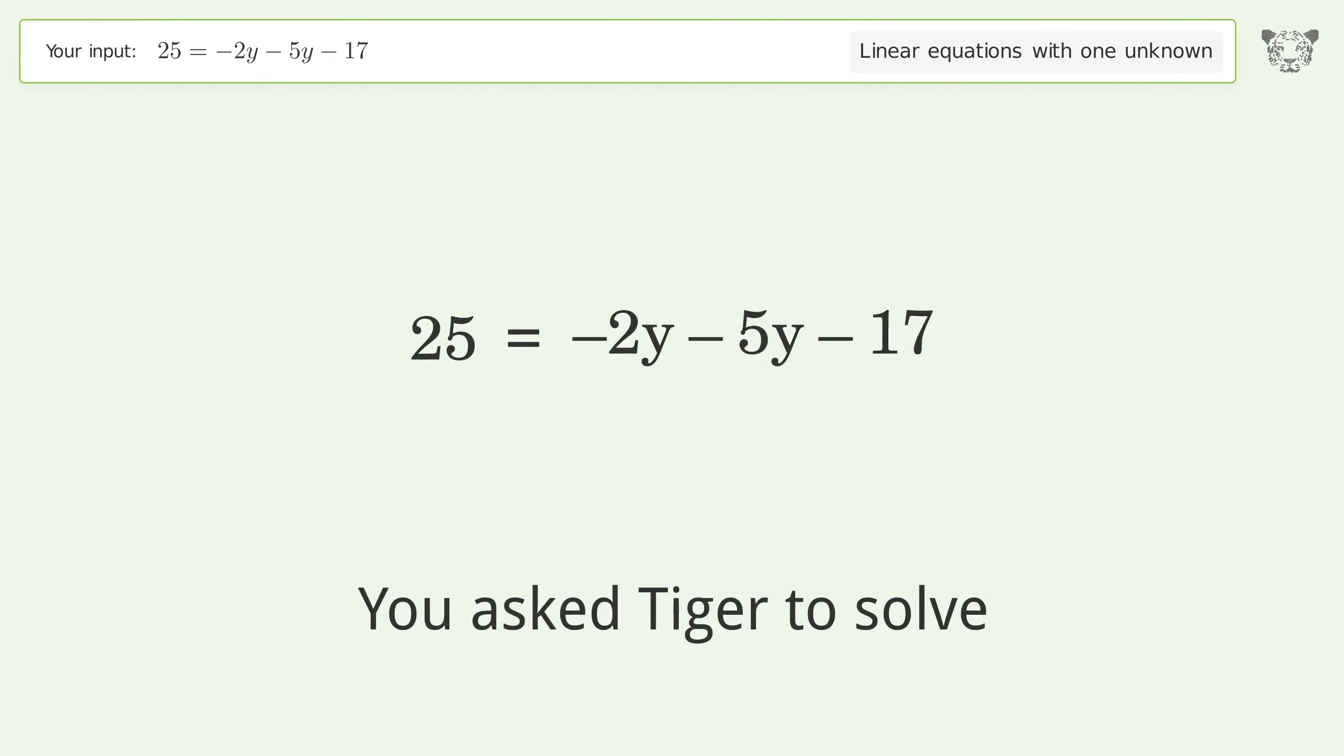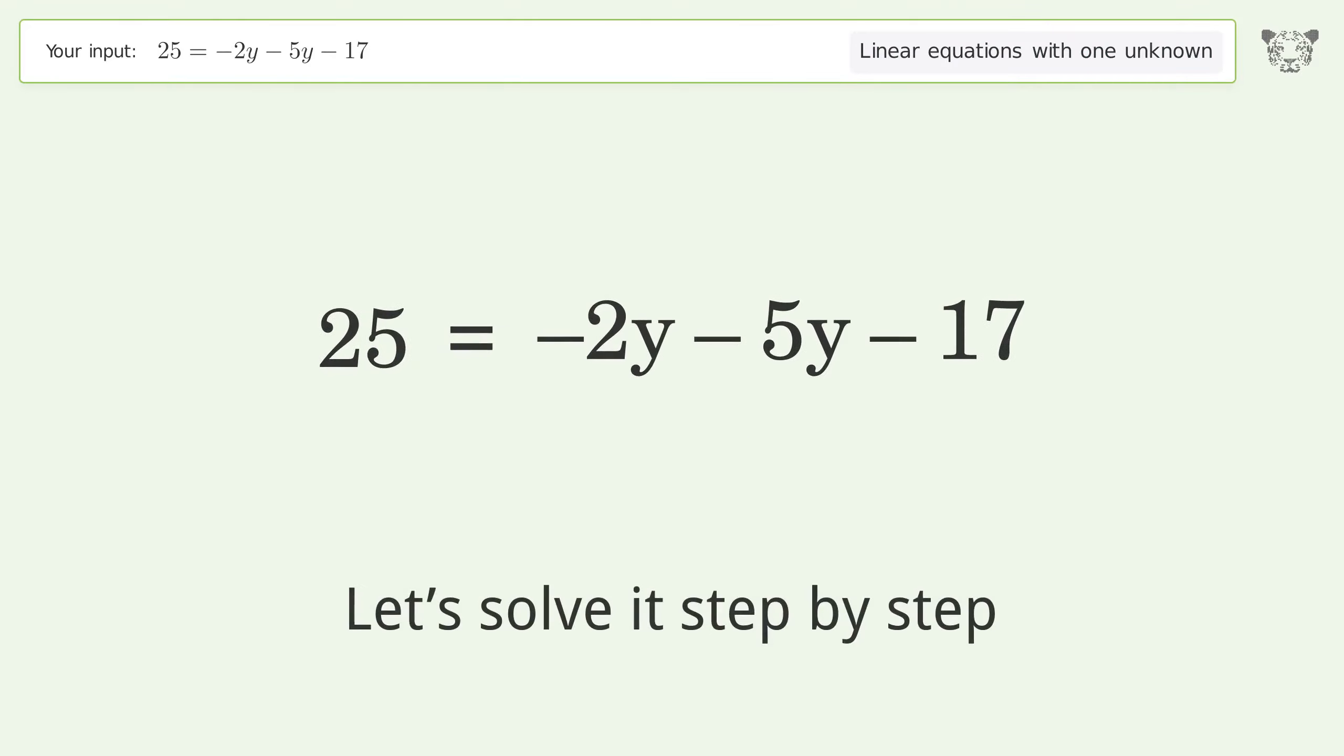You ask Tiger to solve this. This deals with linear equations with one unknown. The final result is y equals negative 6. Let's solve it step by step. Simplify the expression. Simplify the arithmetic.